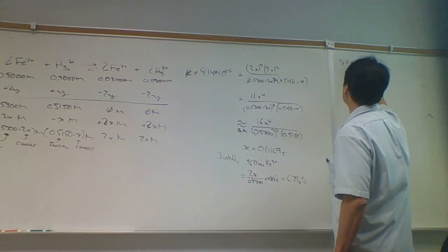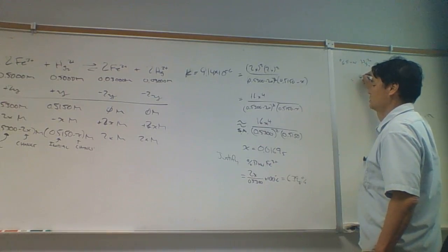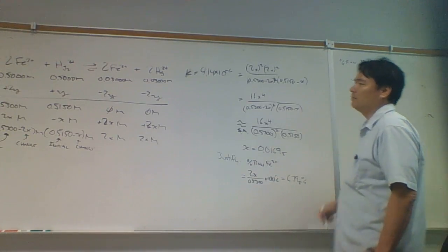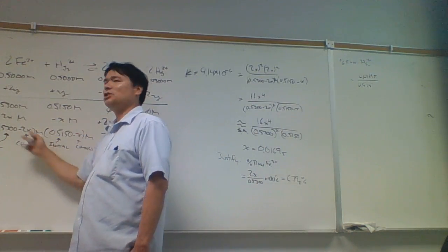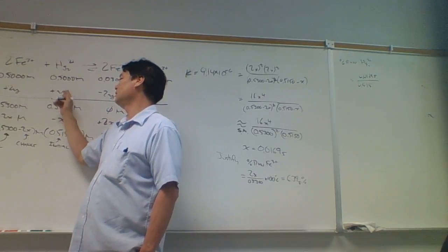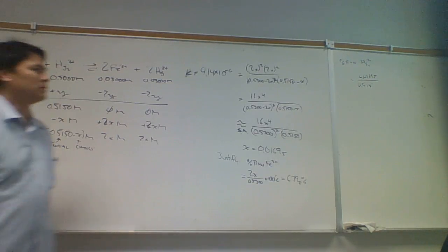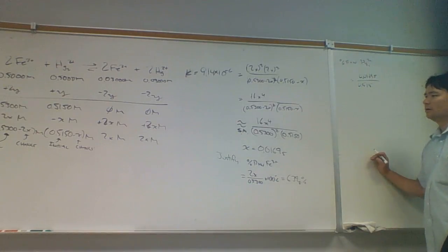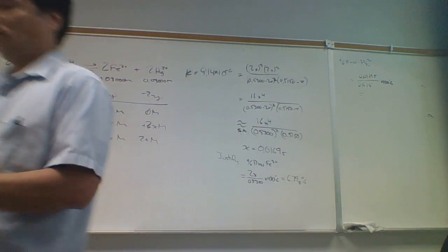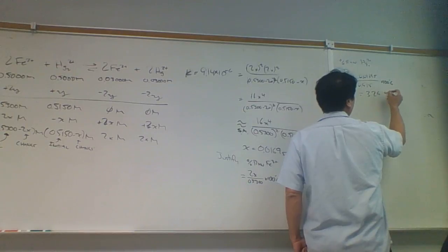Let's look at the percent reaction of the mercury 1, Hg₂²⁺. That's equal to the change, which is 0.01695, over the initial 0.515. We have to use these new initials because we changed the ICE table from the original. The X that we solved in this ICE table versus the X we would have solved in the previous ICE table — at the end, we would have gotten the same answer. Times 100% gives us 3.29%. That's more livable — maybe that's less significant.